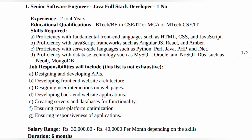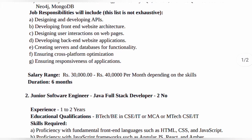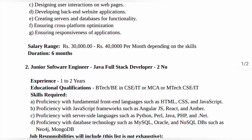For the Senior Software Engineer post, the salary is 30,000 to 40,000 per month. The duration of the project is 6 months, and the experience gained will count towards your permanent record.